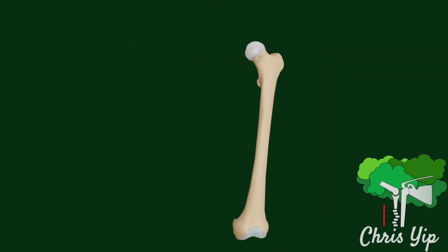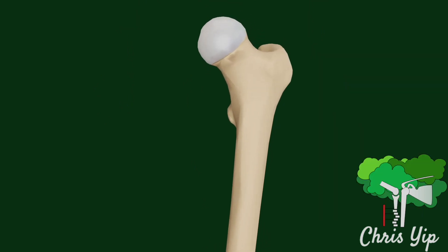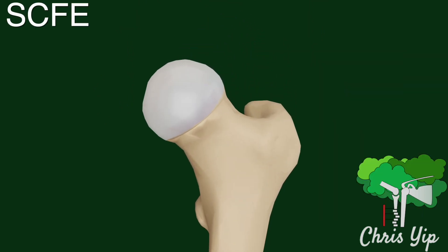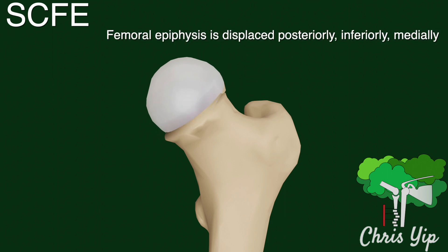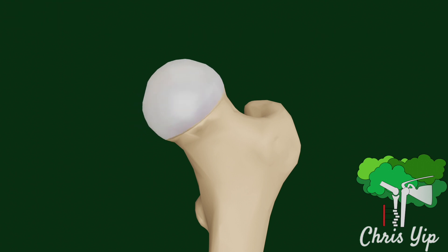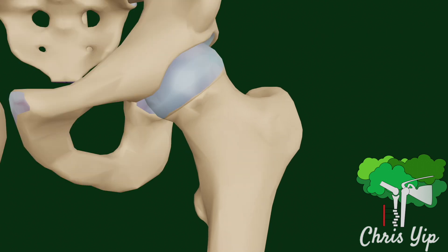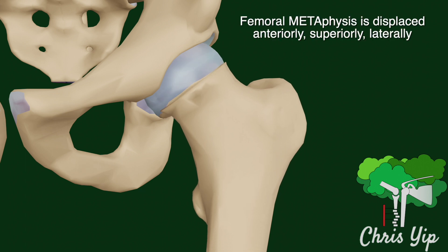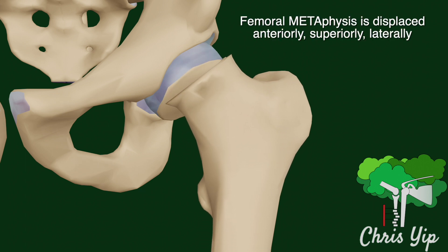In the most common form of SCFE, the femoral epiphysis is displaced posterior, inferior, and to a lesser extent medial to the femoral metaphysis. Since the proximal metaphysis is confined well within the acetabulum, in reality it can be the metaphysis that is displaced anteriorly, superiorly, and laterally.